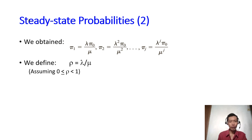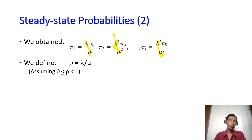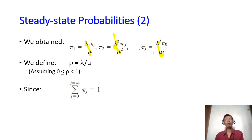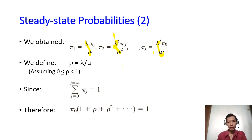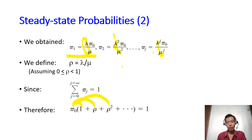First, we define ρ equals lambda over mu, so lambda over mu is ρ, lambda squared over mu squared is ρ squared, and lambda to the j over mu to the j is ρ to the power of j. We assume that ρ is greater than or equal to 0 but less than 1. Then we use the fact that the sum of all π's must equal 1, so π_0 times 1 plus π_0 times ρ (which is π_1) plus π_0 times ρ squared (which is π_2), and so on, must equal 1.